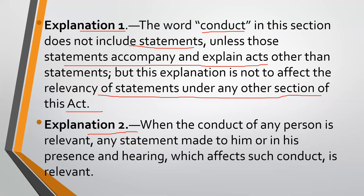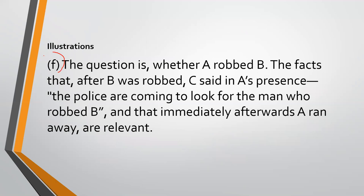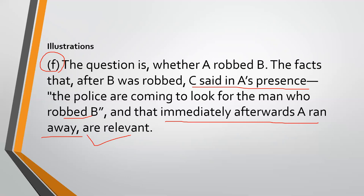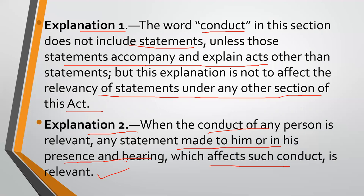Explanation 2 says: if any person's conduct is relevant, and a statement was made in his presence which he heard, and his conduct was affected by it, then that statement will also be relevant. Illustration F in section 8 is based on Explanation 2 — where a person, upon being approached by police, immediately ran away. The running away as conduct is relevant because a statement was made in his presence, he heard it, and his conduct was influenced — he ran away. That is why it will be relevant.